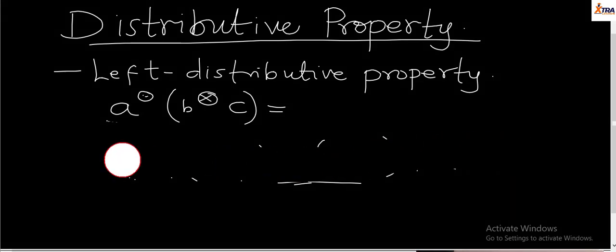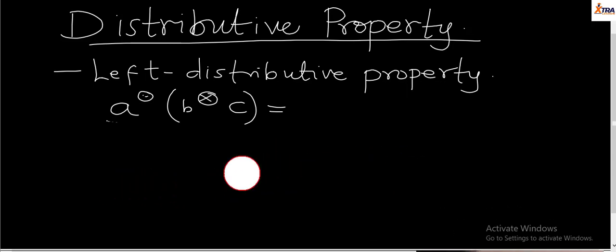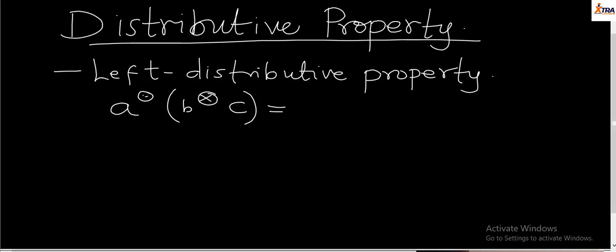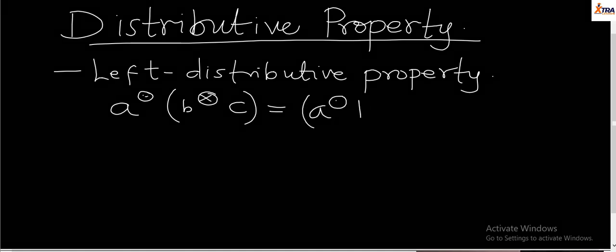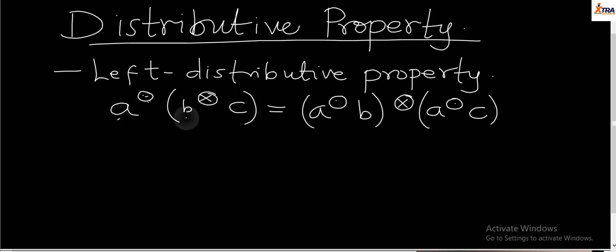From what we've said already, we can deduce that for left distributivity, if you have a operating on (b operation c), using distributivity this becomes (a operation b) combined with (a operation c). So you take a, relate it with b using the operation, and then using that same a, relate it with c. The operation between b and c remains at the center of the two.